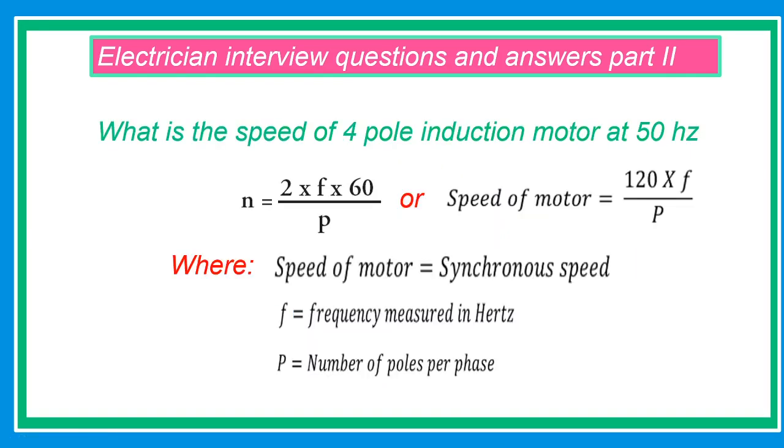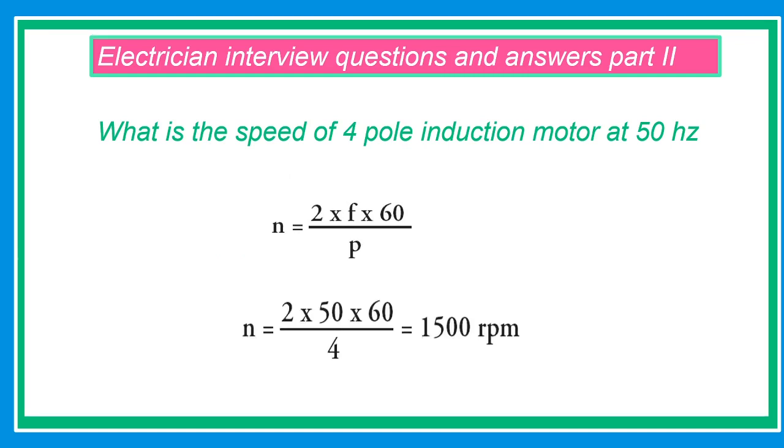What is the speed of a 4-pole induction motor at 50 hertz? The formula is n equals 2 times F times 60 over P, or 120 times F over P, where speed of motor is synchronous speed, F equals frequency measured in hertz, P is the number of poles per phase. The answer is n equals 2 times 50 times 60 over 4 equals 1,500 rpm, or revolutions per minute.